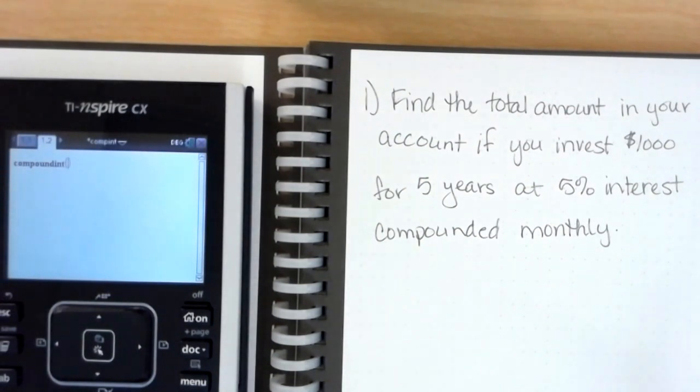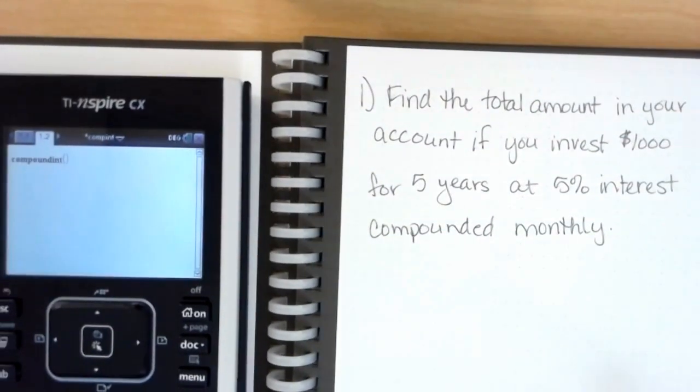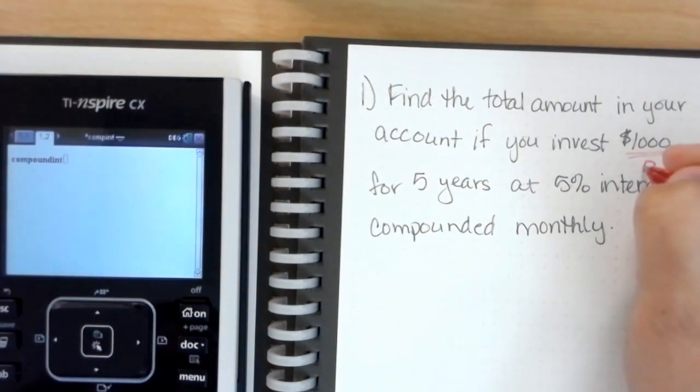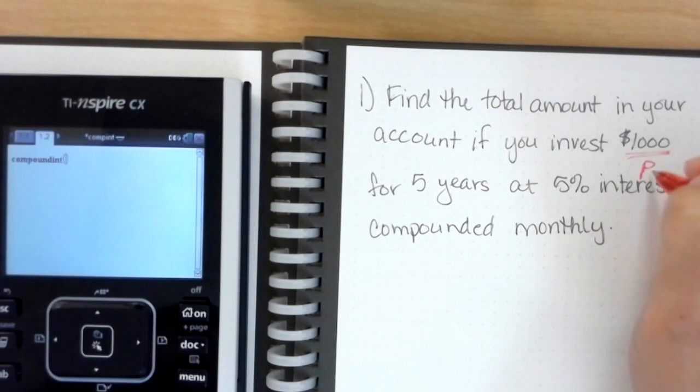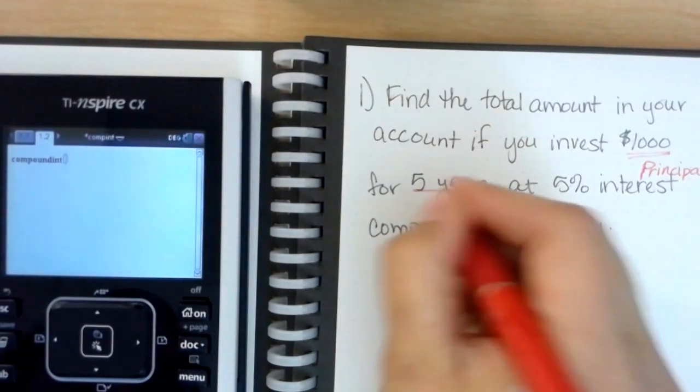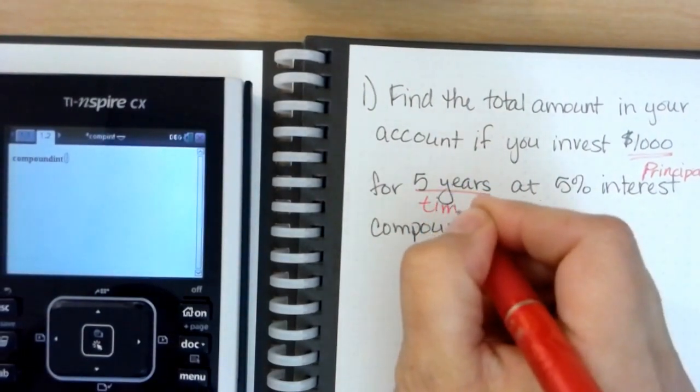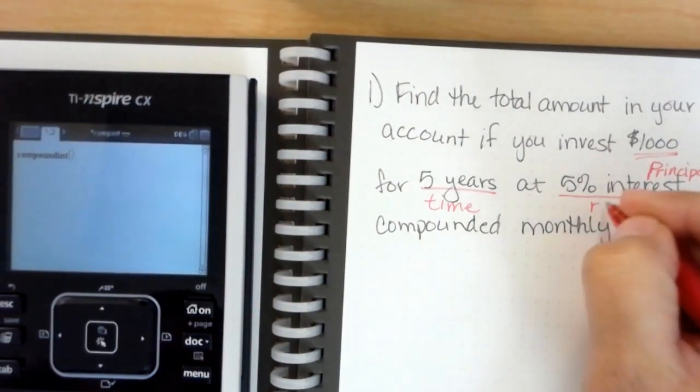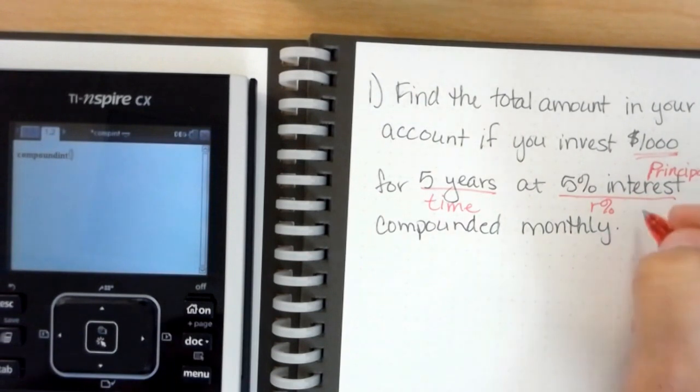So on our problem we need to identify those. When your problem says find the amount in your account if you invest one thousand dollars, that is going to be your P for principal. For five years, that is your t for time. At five percent interest, that is your r percent.